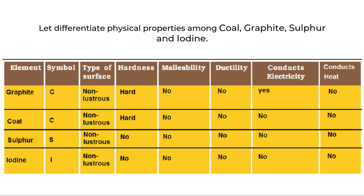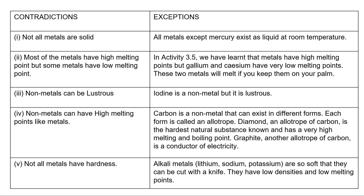Now it's time to understand what are the contradictions and exceptions. I have listed 5 contradictions and exceptions. There are more, but we are going to discuss just these 5 for now. If you have any doubt about any contradiction or exception, let us know in our comment section — we are happy to help. These 5 are the most important ones. The first contradiction is: not all metals are solid.